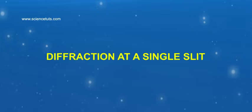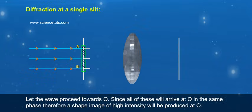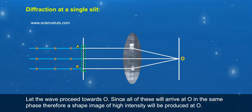Diffraction at a single slit. Let us imagine a plane wave front incident on a narrow slit A-B figure 10.20. All the waves shall arrive at the slit in the same phase. Let the wave proceed towards O.